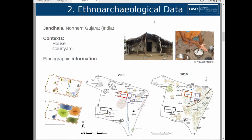The data I'm going to present here comes from an archaeological case of study which is composed by a house and its courtyard, situated in Jandara, India. The idea here is to link the ethnographical information with the chemical patterns that we can identify in the soil chemistry. The use of ethno-archaeological data for this kind of problem has already been published in some studies, especially in Central and South America, but rarely in other parts of the planet.